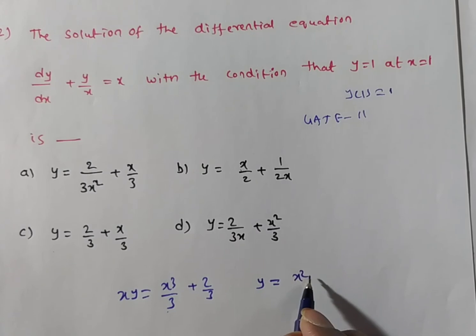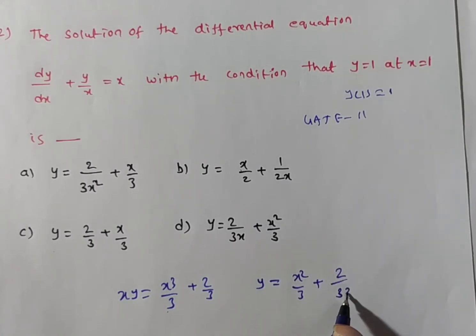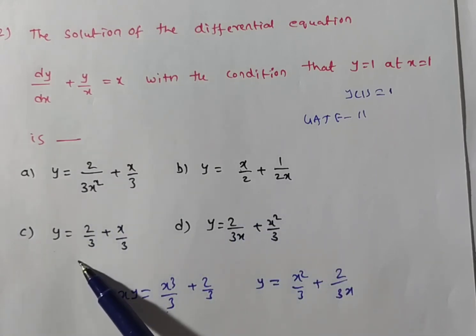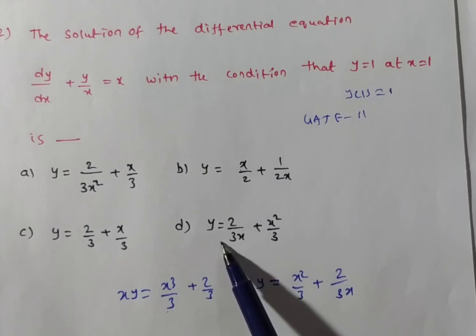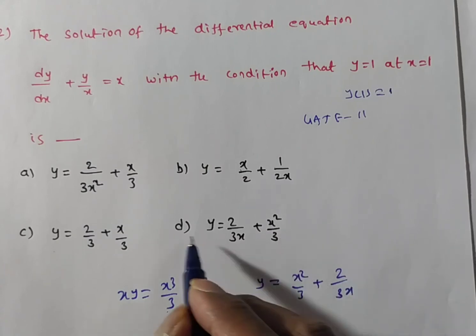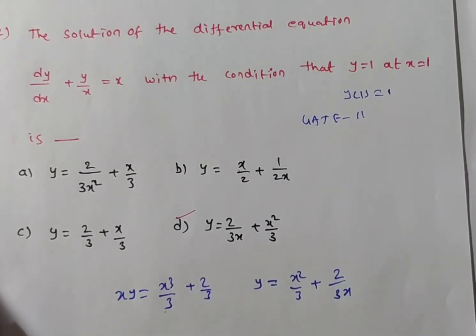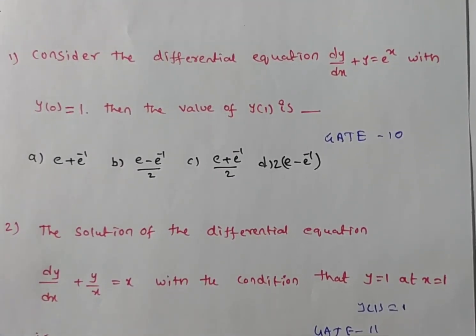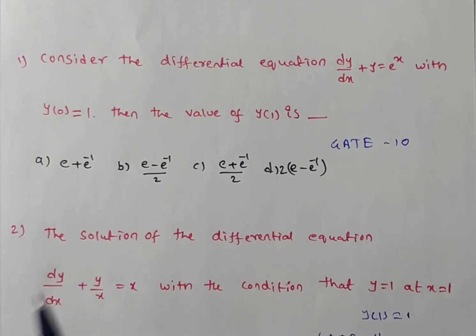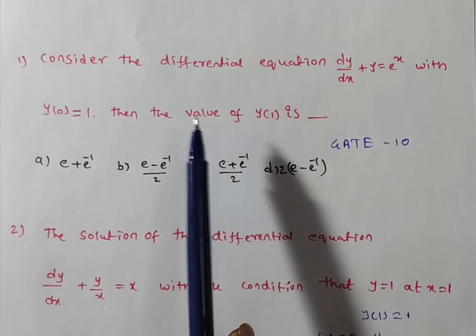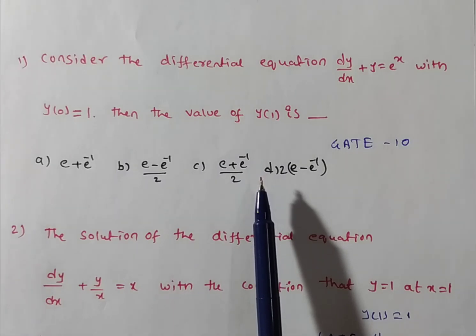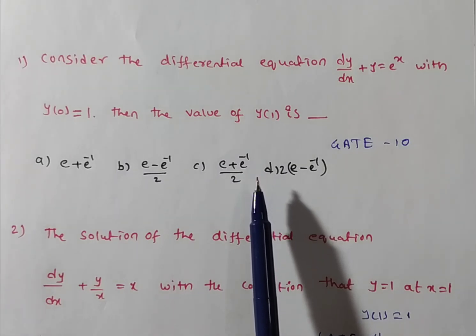Dividing both sides by x to isolate y: y = x²/3 + 2/(3x). Checking the options — option (d) is y = x²/3 + 2/(3x), which matches. So the correct answer is option D. Now try to solve the first problem and write your answer (a, b, c, or d) in the comment box. Thank you for watching!